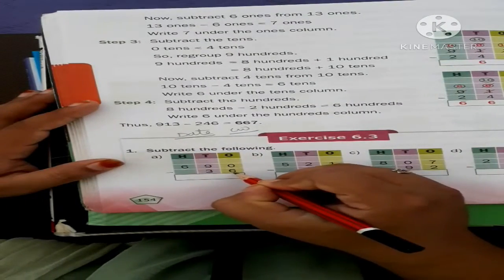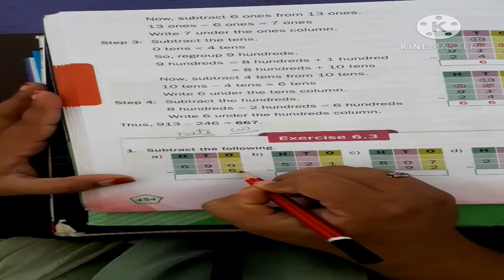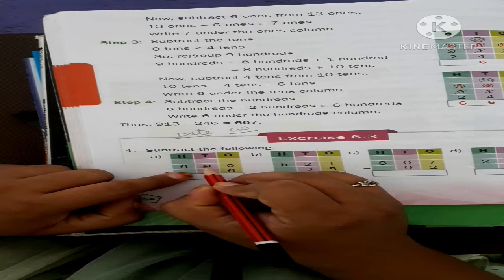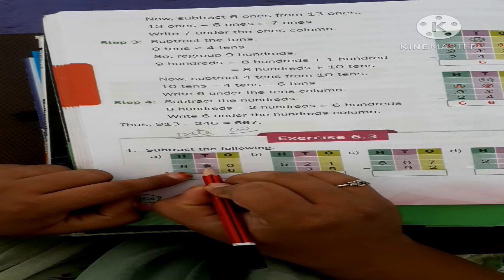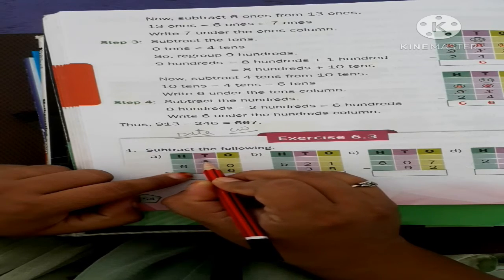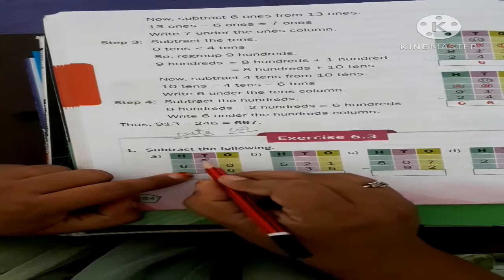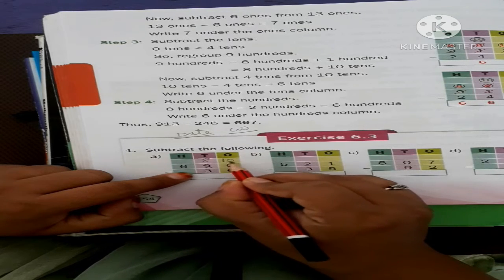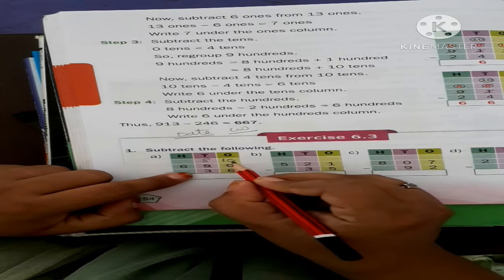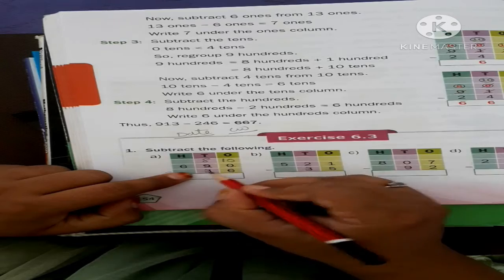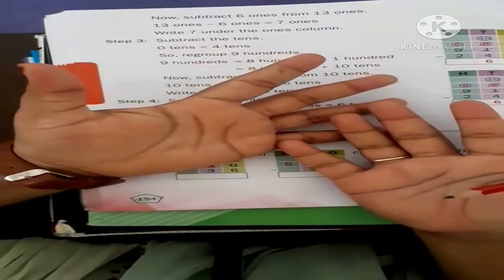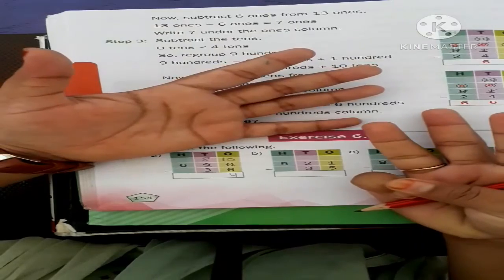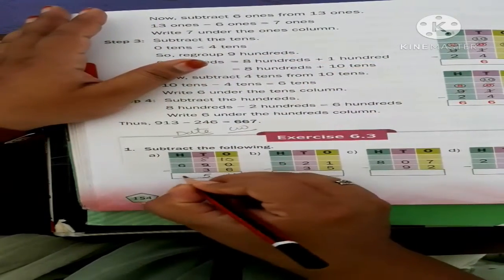Now zero minus six — can we subtract six from zero? No. So what do we do? We borrow 1 from the adjacent number. Suppose you have 9 pencils and I take 1 — you have 8 left. We give that 1 to the tens position, so 0 becomes 10. Now 10 minus 6 — open ten fingers, put six down — four fingers are left. Then 8 minus 3 — open eight fingers, minus three, five fingers are left. And the 6 stays as 6.